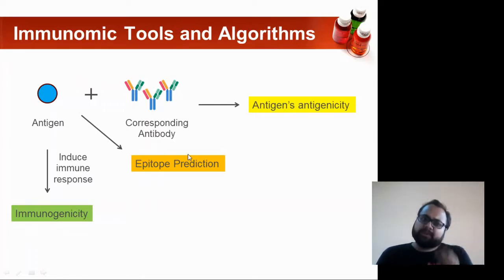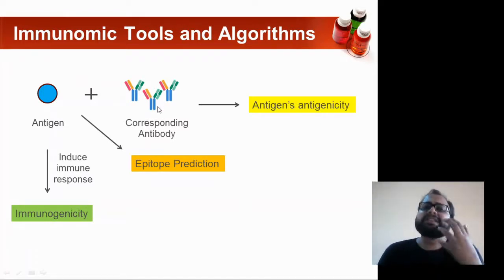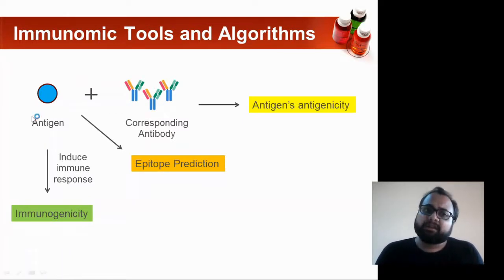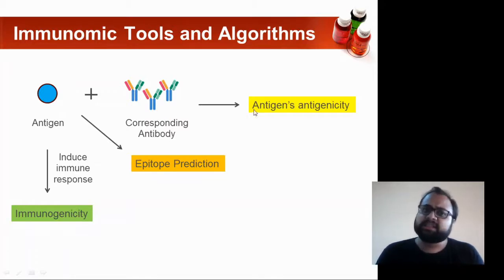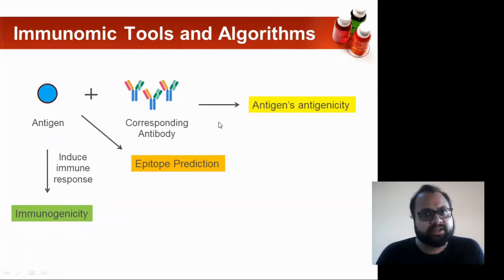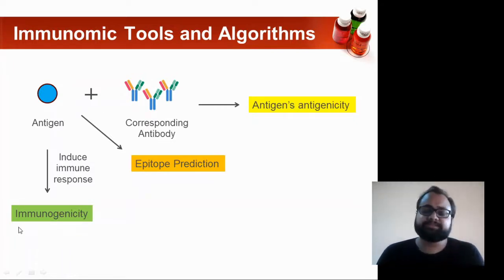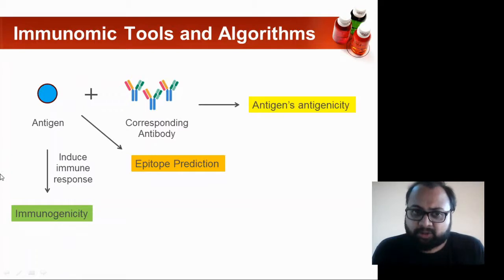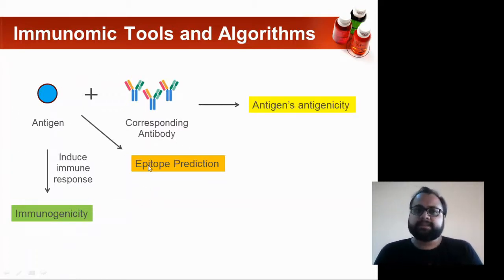The purpose of your epitope is basically to design a molecule which can replace your antigen and bind to the corresponding antibodies, carrying out both antigenicity and immunogenicity.